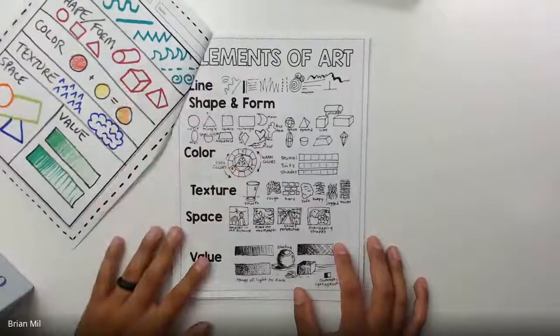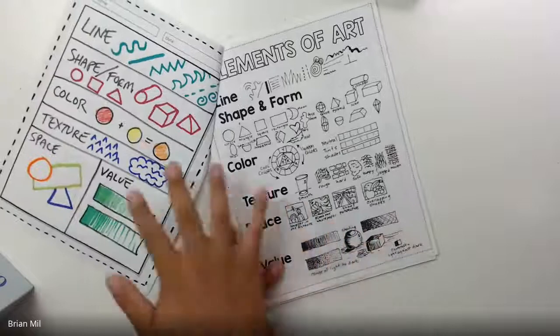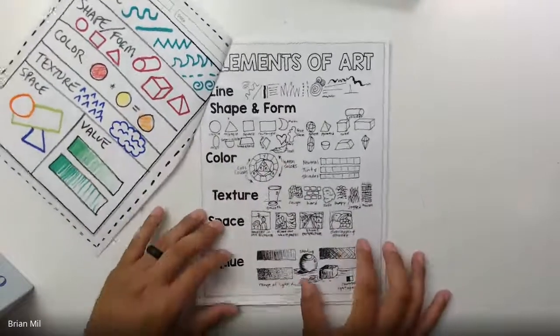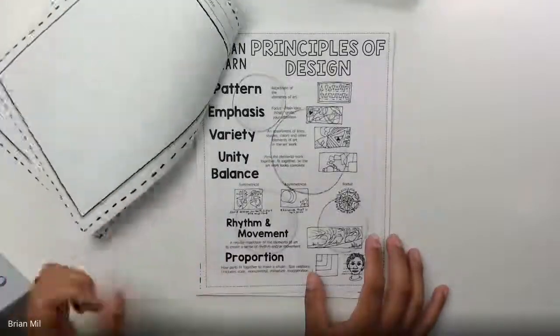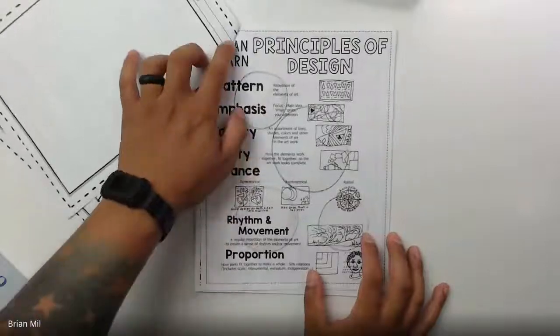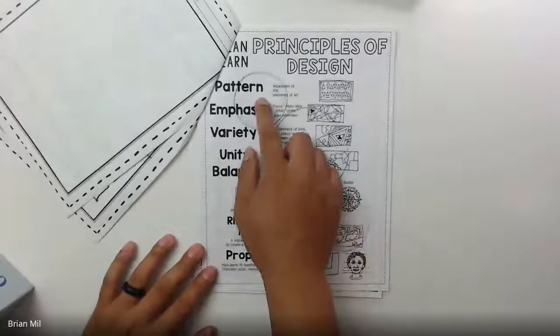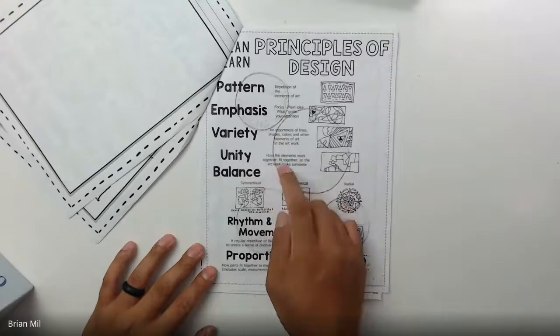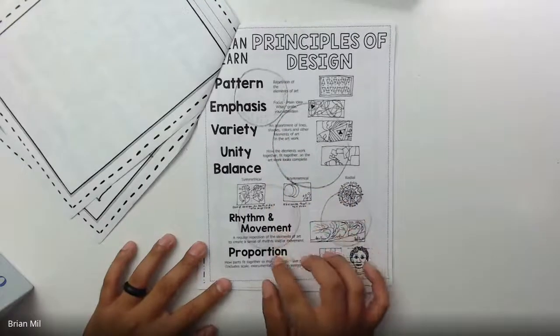So here we go. We've gone over the elements of art on the previous page over here, which is great. And then if we flipped it, we went over the principles of design as well - the pattern, the emphasis, variety, unity and balance, rhythm and movement, and proportion.